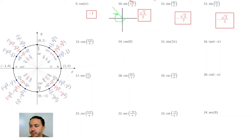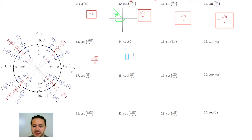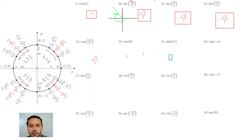Cosine of 11π over 6 is going to be the x-coordinate at 11π over 6, and you'll see that is √3/2. Cosine of 0 degrees is the x-coordinate at 0 radians, and the x-coordinate is 1. For sine of 2π: 2π is coterminal to 0, so we're looking at that same coordinate (1, 0), and the y value is 0.